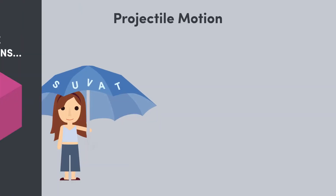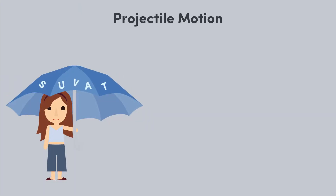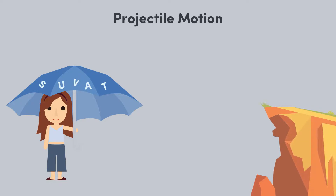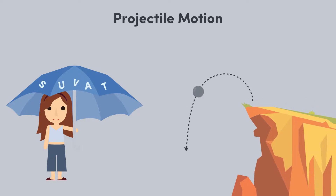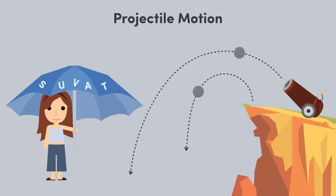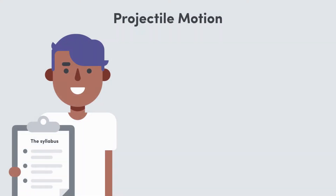Specifically, we'll be looking at projectiles. Think throwing a ball off a cliff, cannons firing — basically anything that falls in an arc. This will help us cover the syllabus points up on the video page.